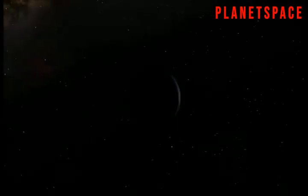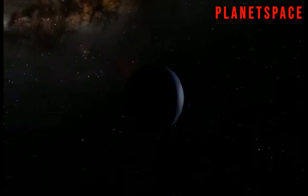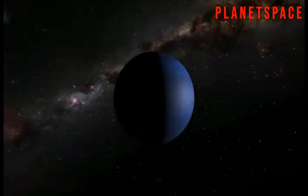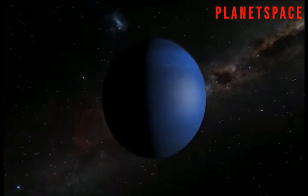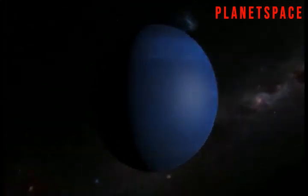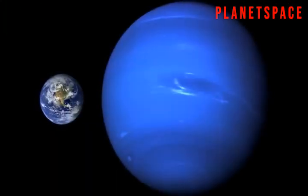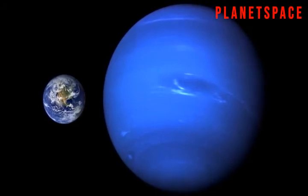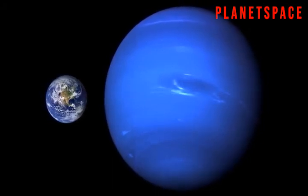Very similar to Uranus is Neptune, the eighth planet from the Sun. Neptune is another gas giant, and like Uranus, it has methane in its atmosphere so it also looks blue. Neptune is a darker blue than Uranus, and scientists aren't sure why.